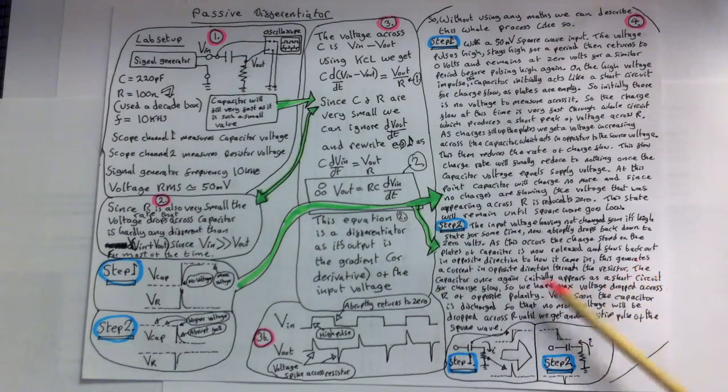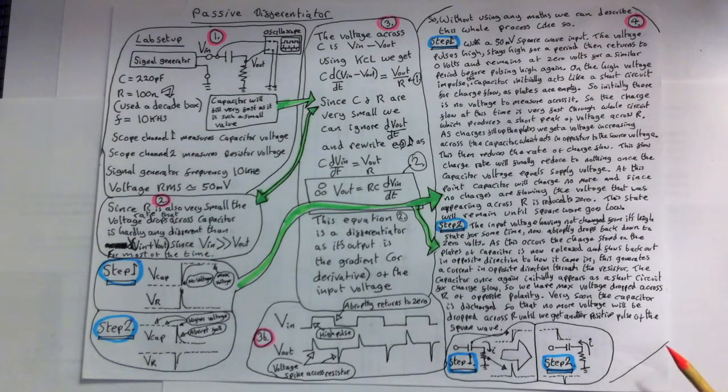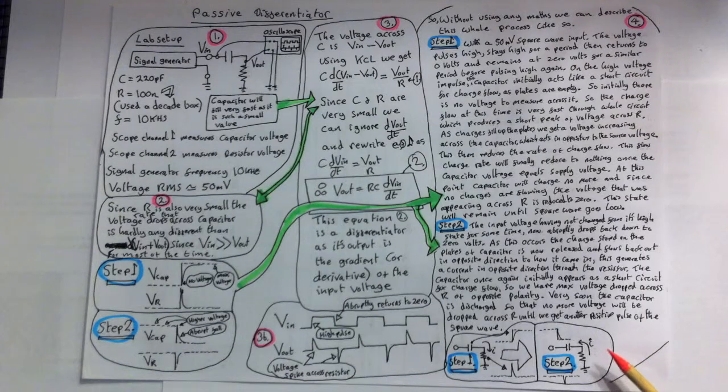This generates a current in opposite direction through the resistor. The capacitor, once again, initially appears as a short circuit for charge flow. So we have maximum voltage dropped across R of opposite polarity. Very soon the capacitor is discharged so that no more voltage will be dropped across R until we get another positive pulse of the square wave.